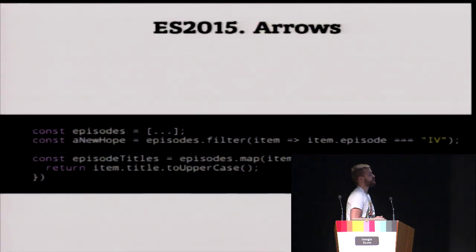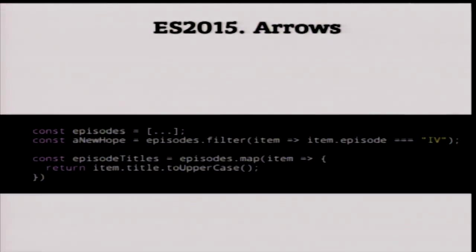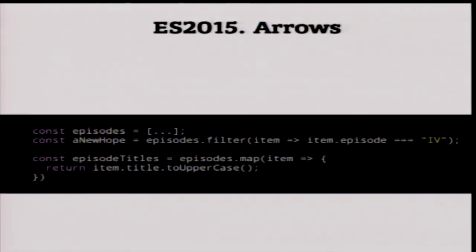Next, you don't need to use the 'function' keyword to execute very simple tasks. If we have in 'episodes' a list of Star Wars episodes, we can filter them with an arrow function — you don't need to write 'function', then the item argument, then 'return item'. Arrow functions can have a body or not have a body.